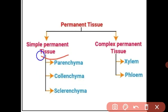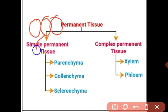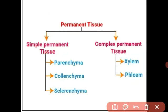What is meant by simple permanent tissue? Simple permanent tissue is the tissue which is made from one type of cell. All the cells have the same structure and all the cells perform the same function.